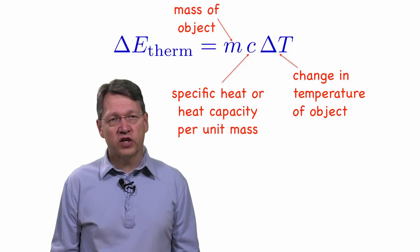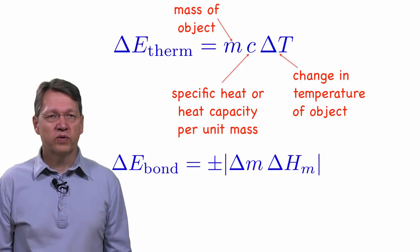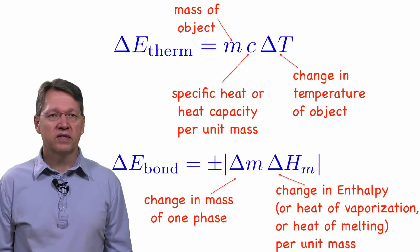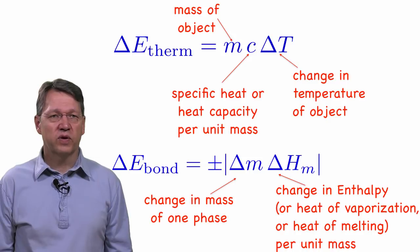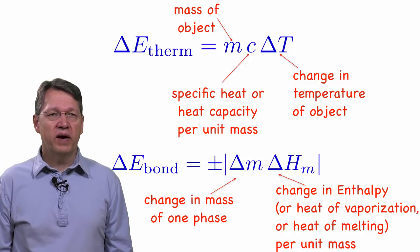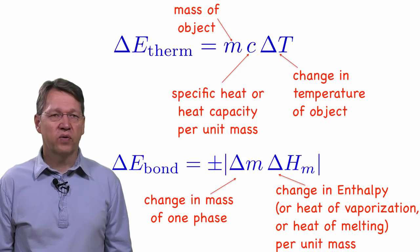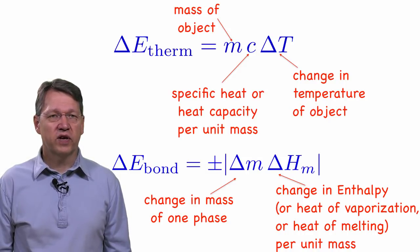For phase changes and chemical changes, the change in bond energy grows with the change in enthalpy per unit mass times the mass that underwent the phase or chemical change. You may not have heard of enthalpy before, but you might have heard it called the heat of vaporization or the heat of melting in those special cases.